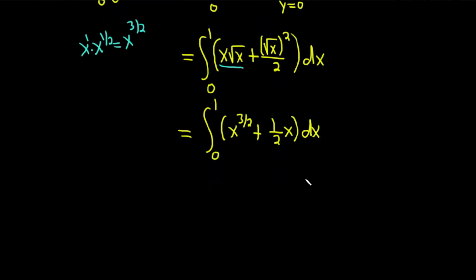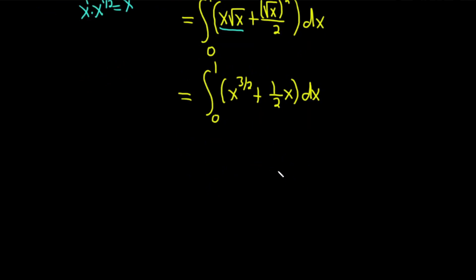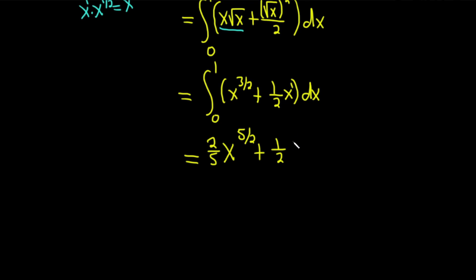Very nice. Now we're in a more familiar place — this integral is not too difficult. We're just going to use the power rule to finish up. Integrating x to the 3/2, we add 1 to the exponent: 3/2 plus 1 is 3/2 plus 2/2, which is 5/2. Dividing by 5/2 means we multiply by 2/5. Plus 1/2 times x to the 1, giving us x squared over 2. We're evaluating from 0 to 1.